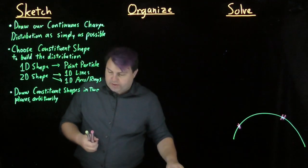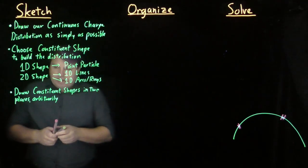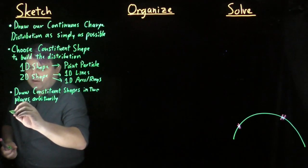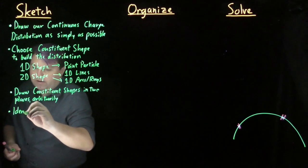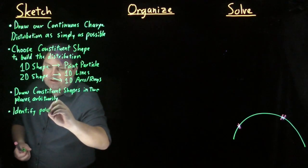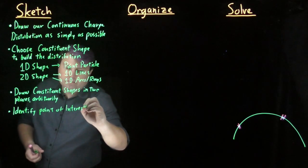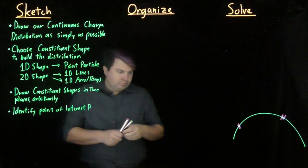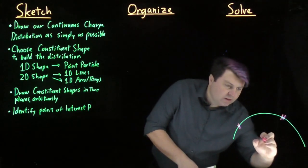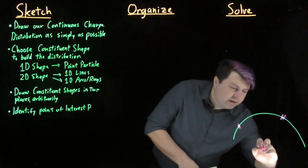We've drawn our two slices on the distribution arbitrarily, and then we want to identify the point of interest, P. So, we might be finding it here.